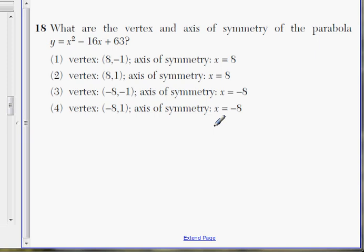Okay, number 18, what is the vertex and axis of symmetry of the parabola? Well, let's start with axis of symmetry first. There's actually a formula for axis of symmetry. The formula is x equals negative b divided by 2a.